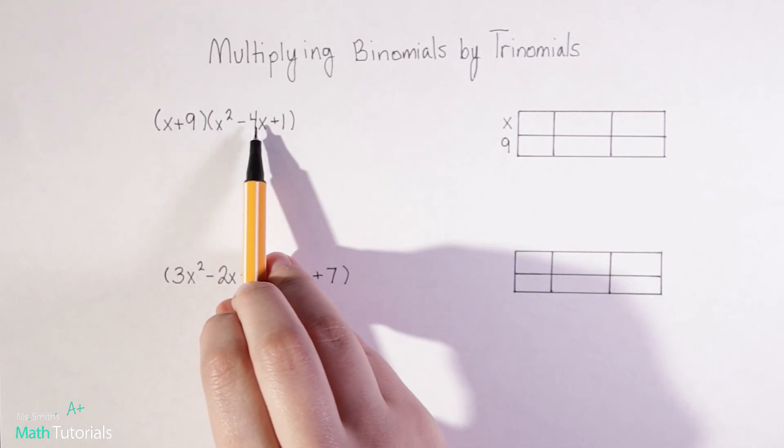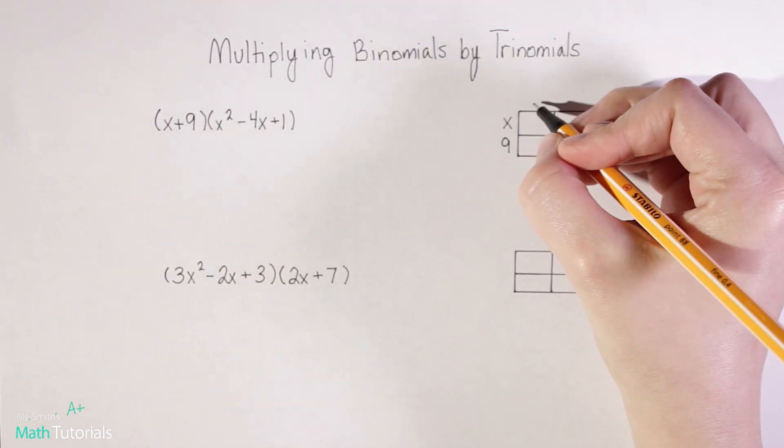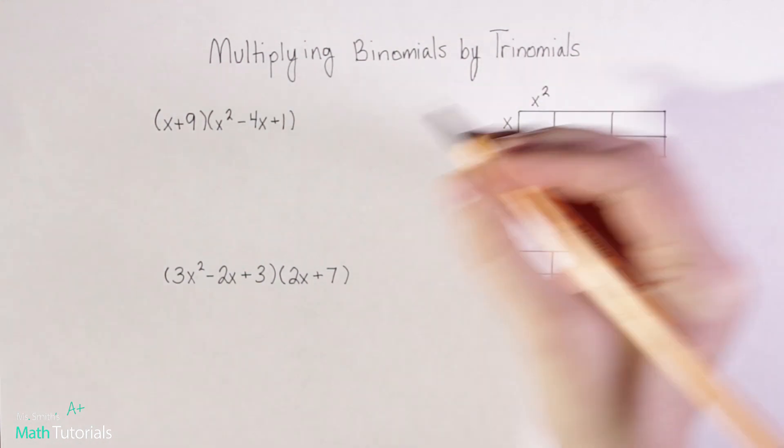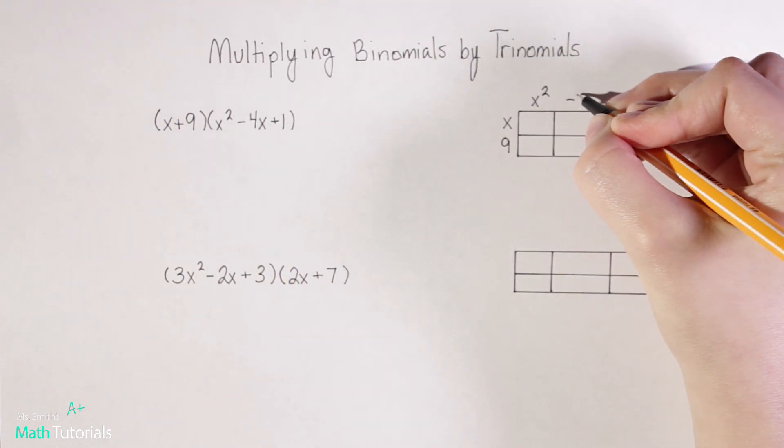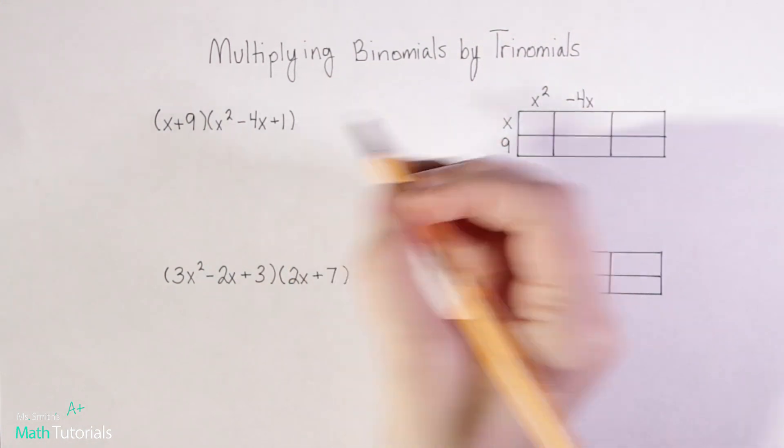Now you take your trinomial and you put each term above a box. So x squared would be my first term, negative four x, and we do need to include that negative sign, and one.